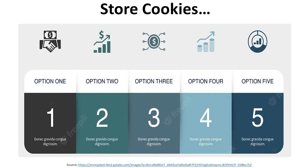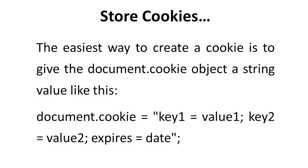The easiest way to create a cookie is to give the document.cookie object a string value. For example: document.cookie = "key1=value1; key2=value2; expires=date". The expires attribute is optional. If you specify a valid date or time, the cookie will expire on that date or time, after which the cookie value will no longer be accessible. It is totally depending on the programmer whether to use it or not.